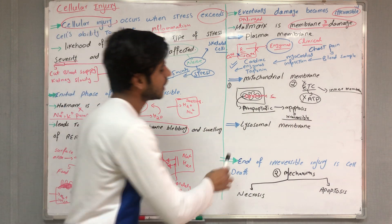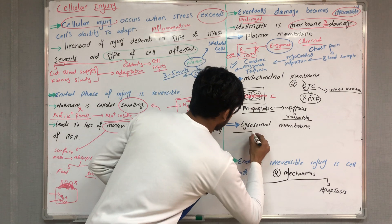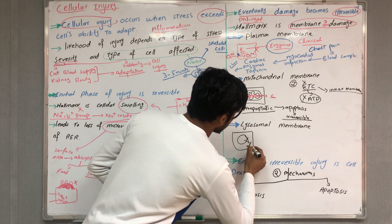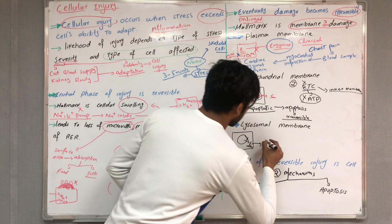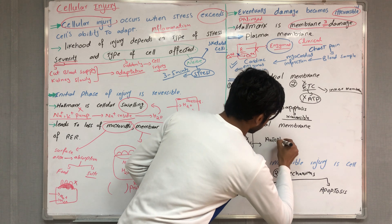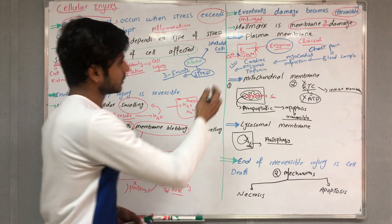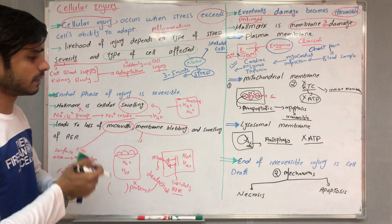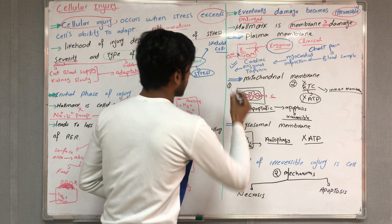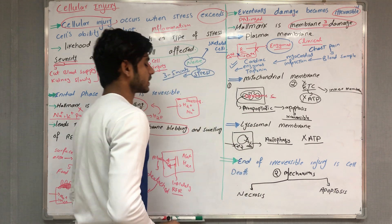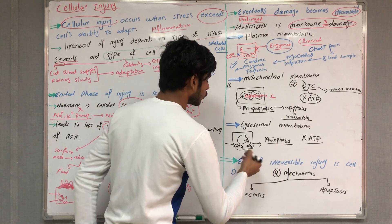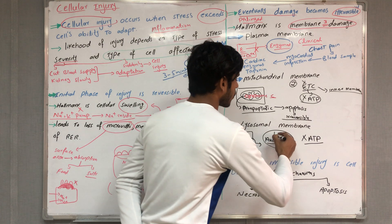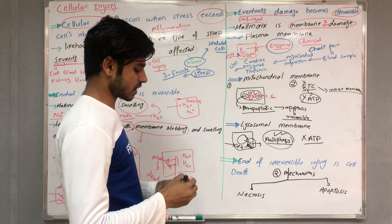The third type of membrane damage is lysosomal membrane damage. When lysosomes are damaged, lysosomal enzymes are released into the cell, causing autophagy of the organelles. Additionally, calcium that has entered the cell activates these lysosomal enzymes further, causing more autophagy. Destruction of organelles such as mitochondria leads to no ATP production, confirming irreversible injury.